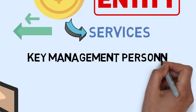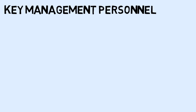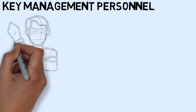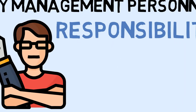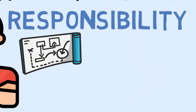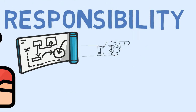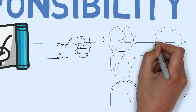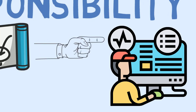Key management personnel are those persons having authority and responsibility for planning, directing and controlling the activities of the entity, directly or indirectly, including any director, whether executive or non-executive, of that entity.